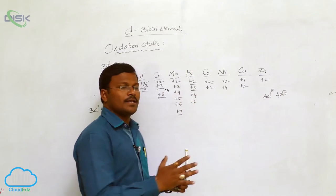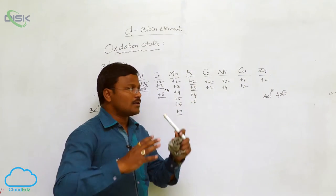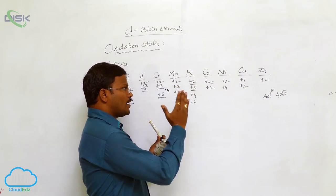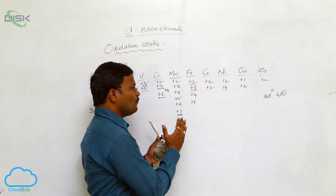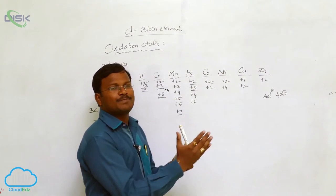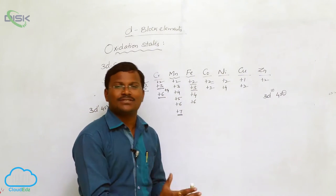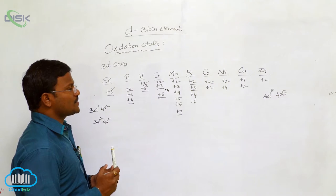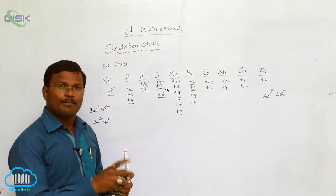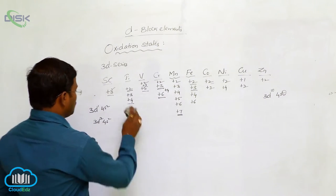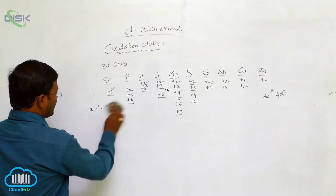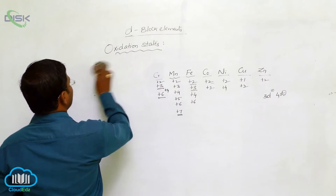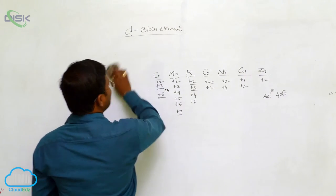Including zinc, these are called transition elements. Due to their various types of oxidation states, they form different types of chemical compounds. This concludes the topic of oxidation states of d-block elements.